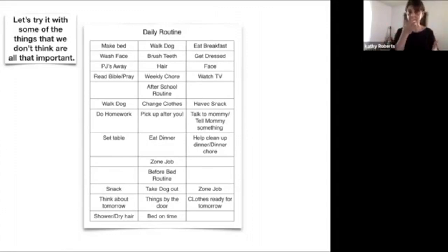Let's try it with some of the things that we don't think are that important. This is a child's daily routine. This is like maybe a teenager's daily routine, a 12-year-old's daily routine. Here's all the things in order. There's their morning routine: make bed, walk dog, eat breakfast, wash face. Then they have an after-school routine: walk dog, change clothes, have snack, and then before bed routine. Now, let's just take something out of order. Let's put the watch TV first and the walk dog last.